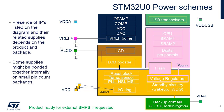For the LCD, you can power it from VLCD — an external pin with external power supply — or you can choose to power it from the LCD booster, which will be powered from VDD and provides power for the LCD internally. For VDD, this is the main power supply of the microcontroller. It powers the reset block, the temp sensor, the clocks like the PLL and internal clocks, the IO ring, the voltage regulator that provides the V-core, and all the standby circuits like wake-up and the watchdog.